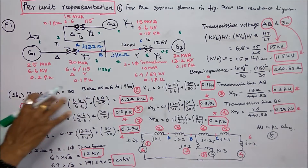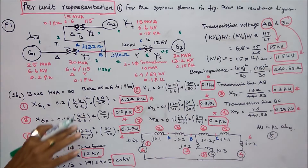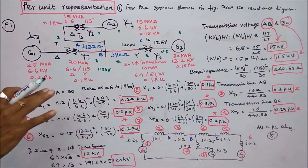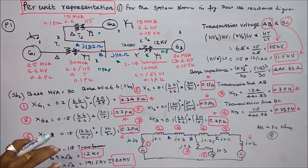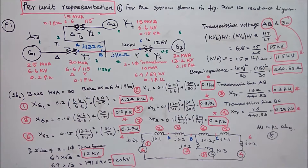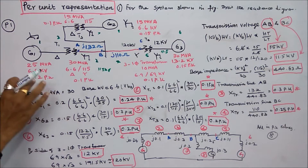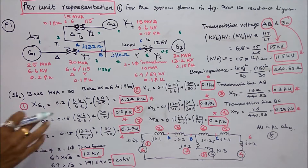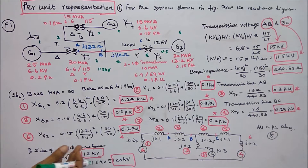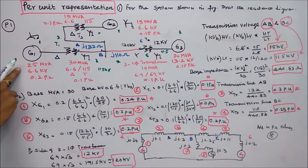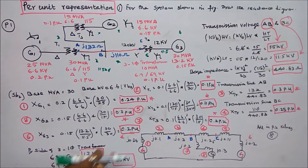The highest value is 30 MVA. So the first step is to choose base MVA = 30, base kV = 6.6. For generator 1, the per unit reactance is given as 0.2, so new per unit = 0.2 × (6.6/6.6)² × (30/25) = 0.24 per unit.